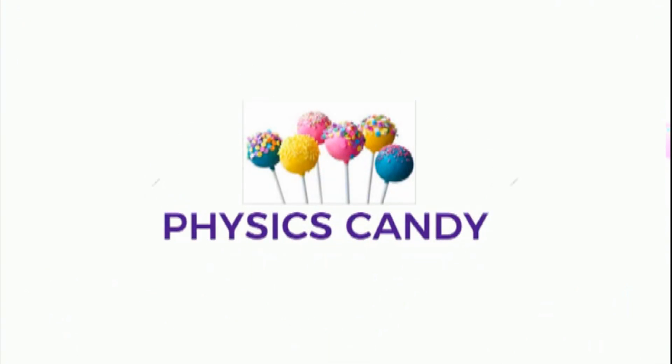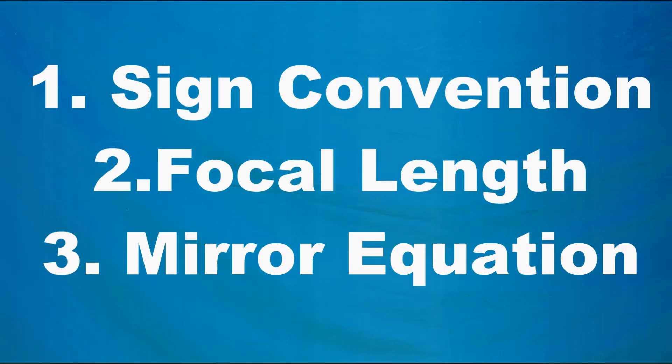Hello everyone, physics always sweet. Welcome to this session on CBSE Class 12 Physics, Chapter 9: Ray Optics and Optical Instruments, Part 2. We have already discussed Part 1 in the previous video. In this part we will discuss just three topics: sign convention, focal length of mirror, and mirror equation.